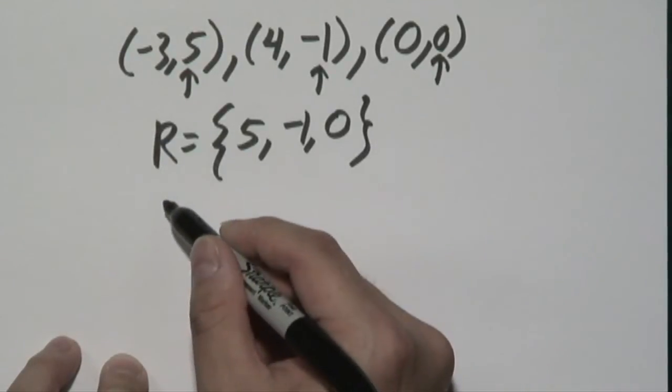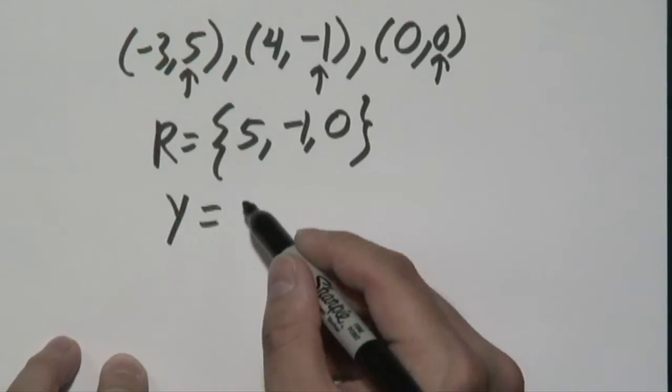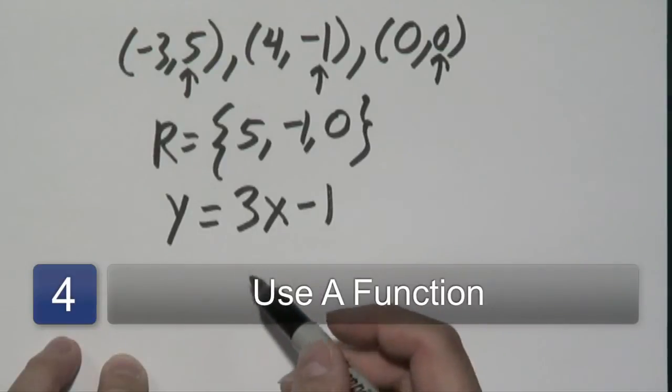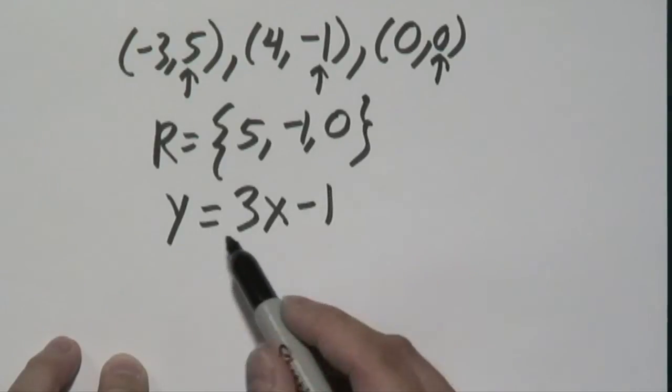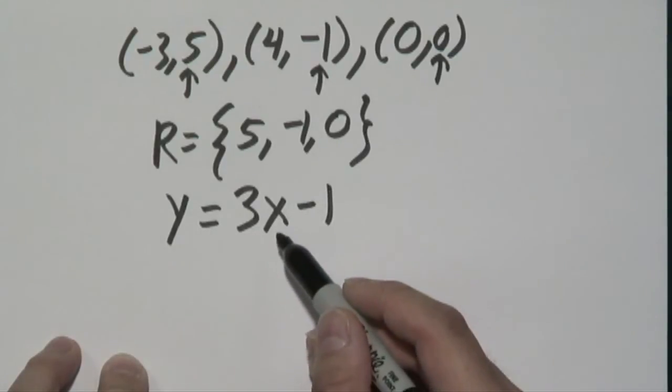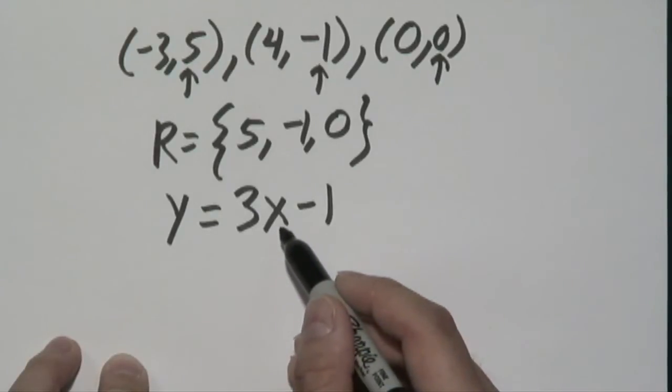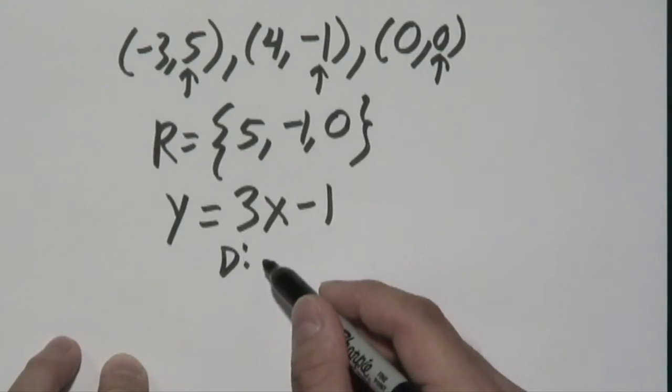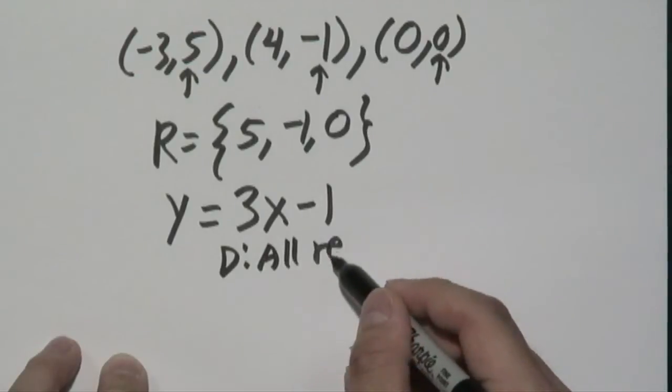Suppose you had y = 3x - 1. In this particular case, to find out what your range is, you need to look at what numbers you're allowed to plug in for x. Here, your domain, you could plug in whatever numbers you want for the x values because there's no fractions or square roots or anything like that. So your domain would be all real numbers.